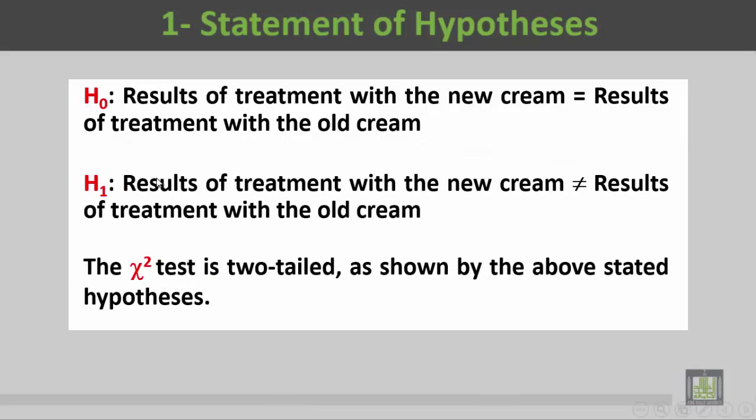The alternative hypothesis (Hₐ) indicates that results of treatment with the new cream are not equal to those of treatment with the old cream. The chi-square test is two-tailed, as shown by the above stated hypotheses. If we look to the alternate hypothesis, we'll find the not-equal sign, which is a characteristic sign for two-tailed hypotheses.